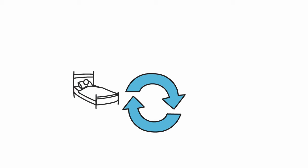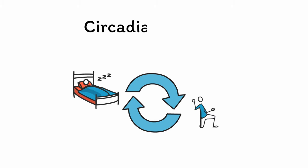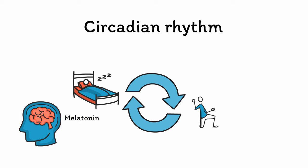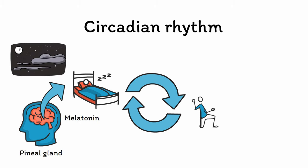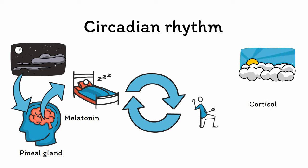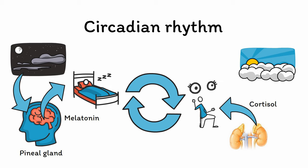The daily cycle of alternating between periods of sleep and wakefulness is known as the circadian rhythm. This cycle is regulated by the hormone melatonin, which is secreted at night by the pineal gland in response to low light in the environment. Melatonin decreases wakefulness and promotes sleep. Secretion of melatonin stops in the morning, at which time the hormone cortisol is at its peak. This alternation between melatonin and cortisol correlates with the subjective feelings of being awake or sleepy throughout a 24-hour period.